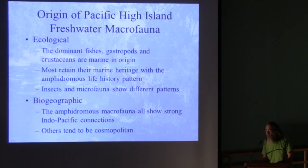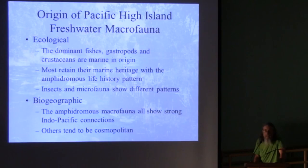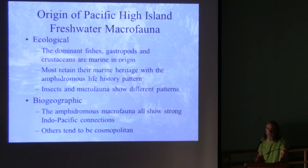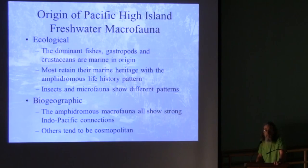These organisms show strong Indo-Pacific connections — when you think about marine organisms on the reef here, they show strong Indo-Pacific connections, so it's no surprise that organisms with marine ancestors show the same pattern. That's not what you see for instance in Hawaiian flora, which is much more diverse in terms of where the plants came from, and it's also more diverse in terms of insects and microorganisms. But because these things are aquatic and marine in origin, they pretty much mirror what you see in coral reef fish and crustaceans.